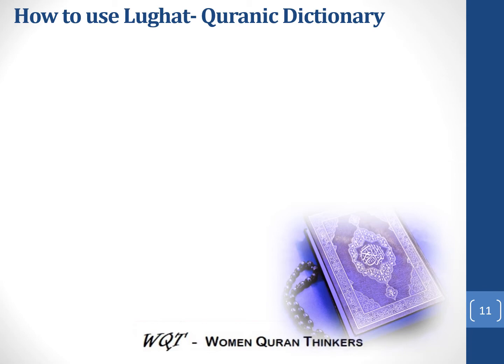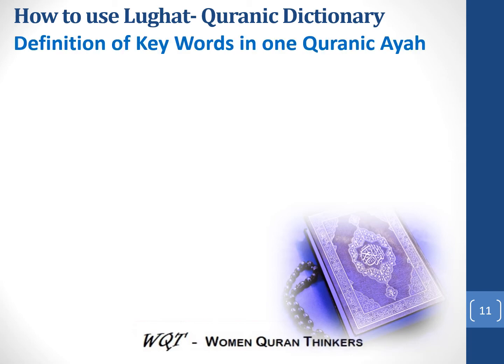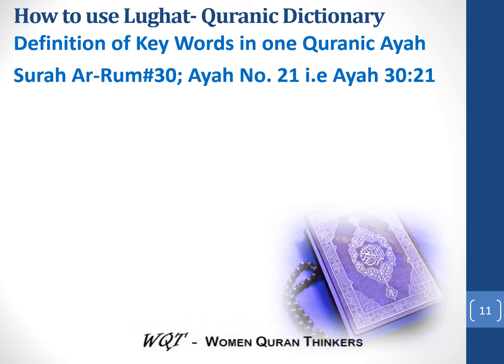Now that we have seen how to use the logat to understand the definition of the word deen, let's pick out more keywords. The basic idea when using logat is to let Quran define the word for you. We have not relied on any external definition — we went into the uses of that word by Quran and researched each and every ayah that used the word deen, because God says in Quran that He explains His ayahs by His own ayahs. We need to understand the root meaning of each word and how it is used across different ayahs.